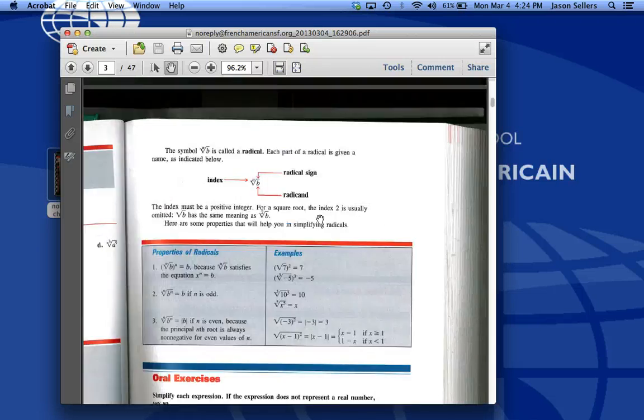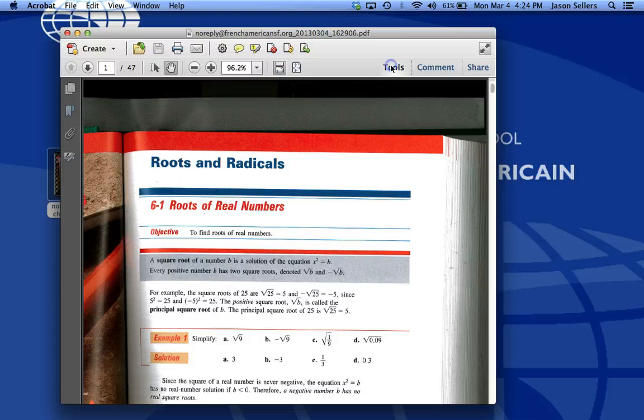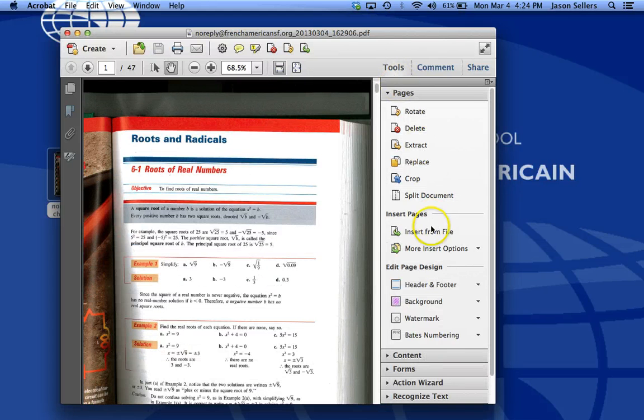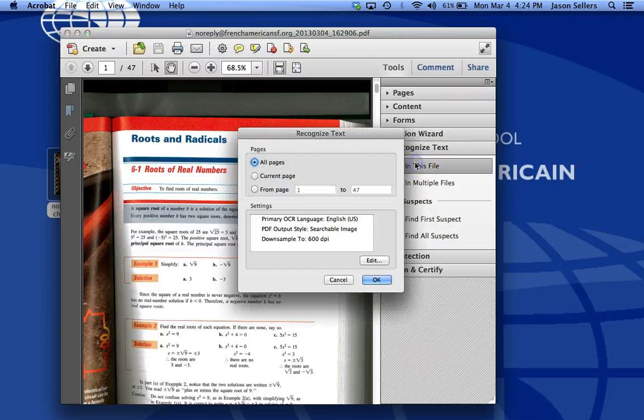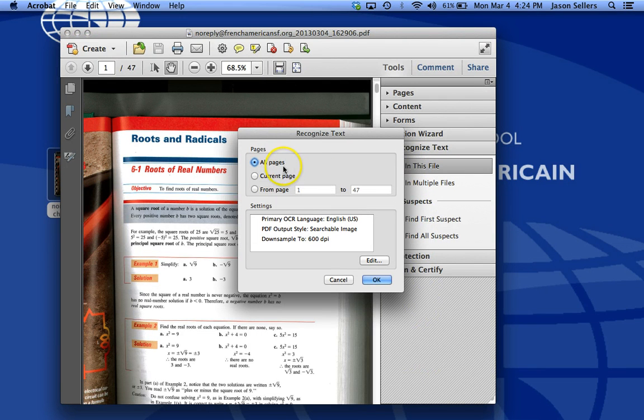So the way that I'm going to fix that, first I'm going to go to Tools, then click on Recognize Text, then click on In This File, say All Pages. And what this is going to do is scan the text on each page and try and reorient it if it's slanted. So I'll click OK.